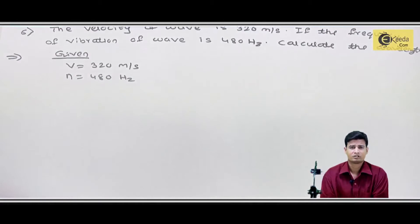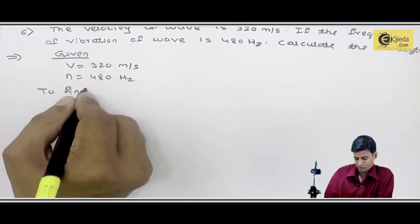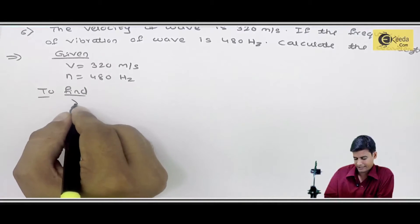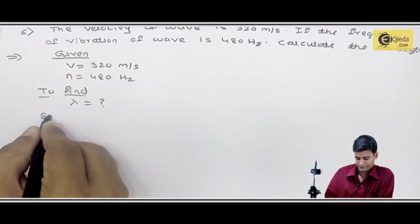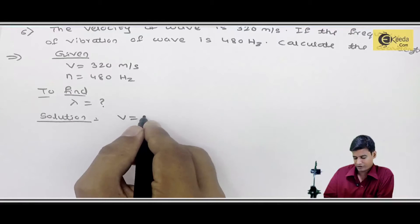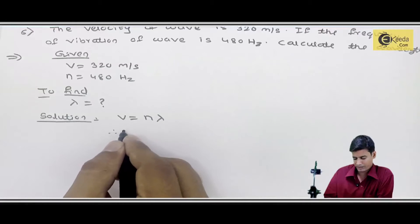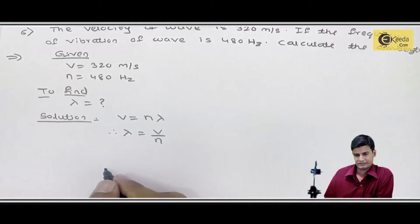Now if the unit is equal then the conversion is not going to go directly to find the wavelength. Solution: wavelength के लिए मेरे पास formula V equals to N into lambda. तो arrange करूंगा मैं, तो lambda equals to V upon frequency.